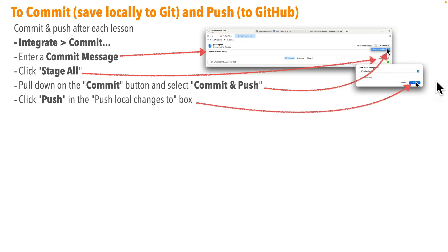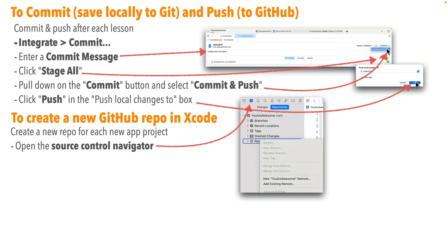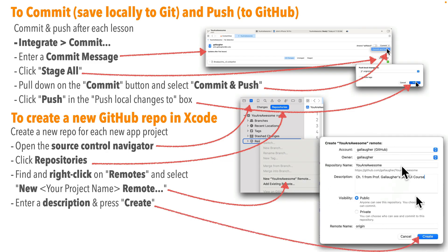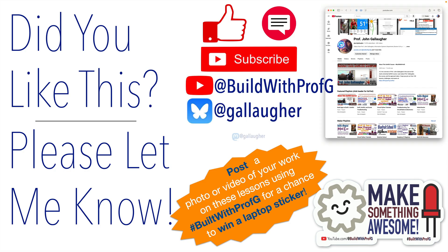To create a new GitHub repo in Xcode — you'll want to create a new repo for each new app project, basically each chapter in the course — open the source control navigator, click Repositories, right click on Remotes and select 'New [project name] Remote', enter a description, and press Create. Note that the first time you do this, the code committed and pushed is the original code created by Xcode, not your latest changes — so be sure to follow with the commit and push steps. Good work, Swifter — keep hacking!